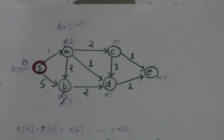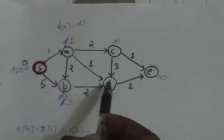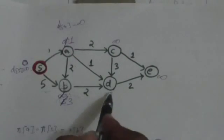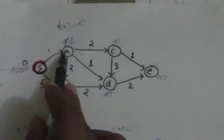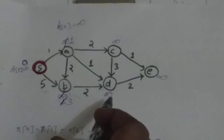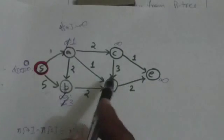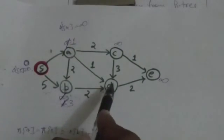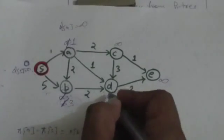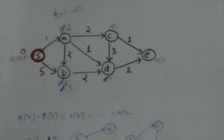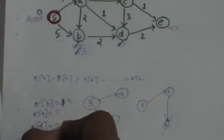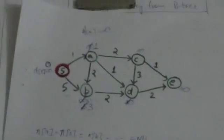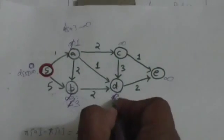Next, relax edge AD: d(A)+weight(AD) = 1+1 = 2, which is less than d(D)=infinity. So we set d(D)=2 and pi(D)=A. Then relax edge AC: 1+2=3, which is less than infinity. So we set d(C)=3 and pi(C)=A. Vertex A is now processed.